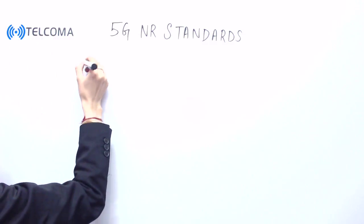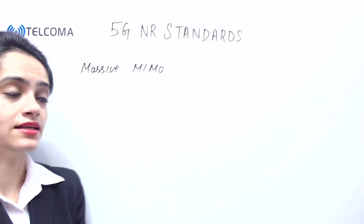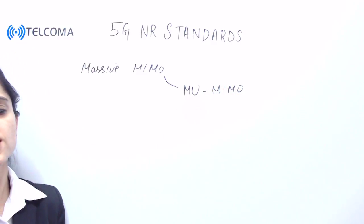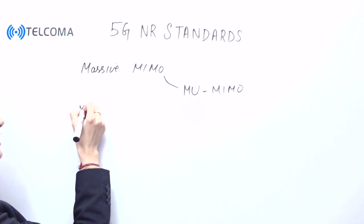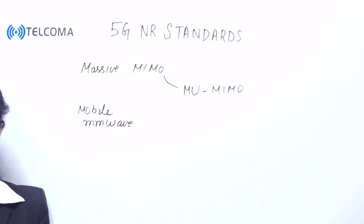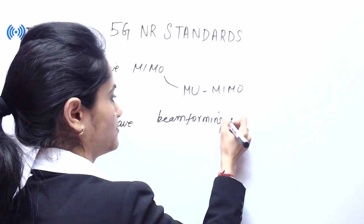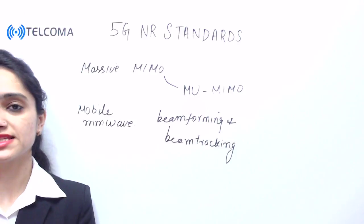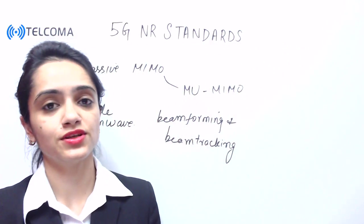The next feature is New Radio massive MIMO. This includes multi-user massive MIMO, which efficiently utilizes a large number of antennas to provide huge capacity and coverage. Another feature is mobile mmWave, which requires beamforming and beam tracking, enabling wide millimeter-wave bandwidth for high capacity and throughput. This concludes the overview of 5G New Radio standards.